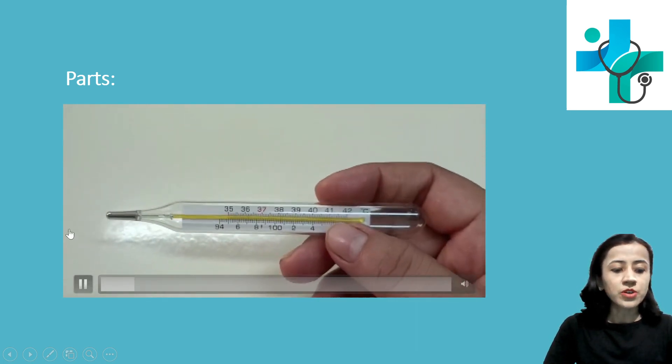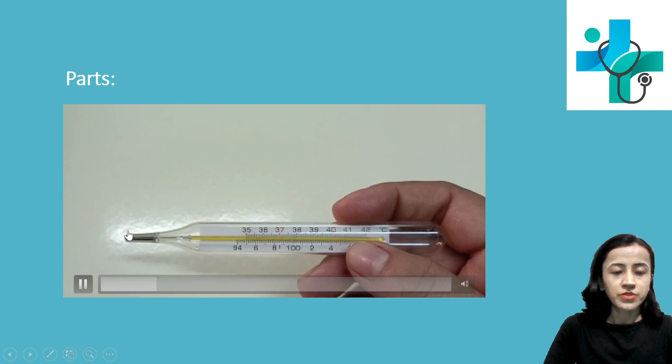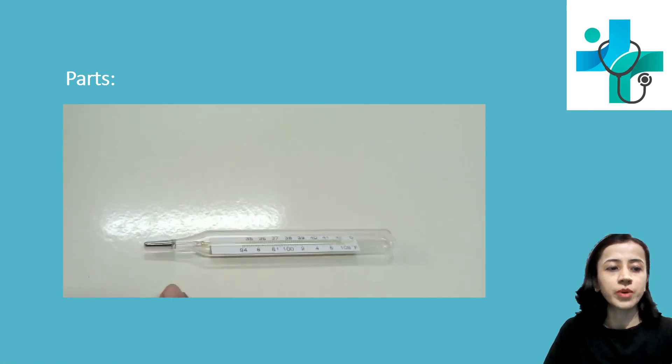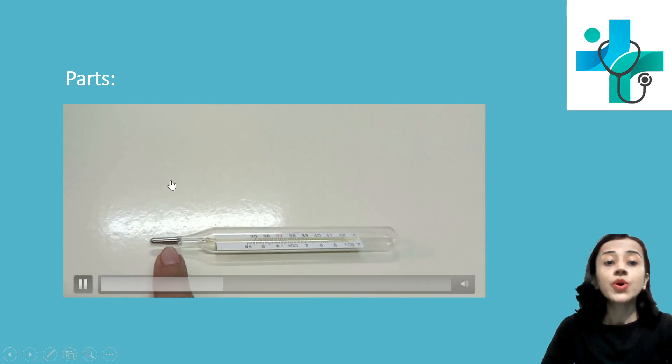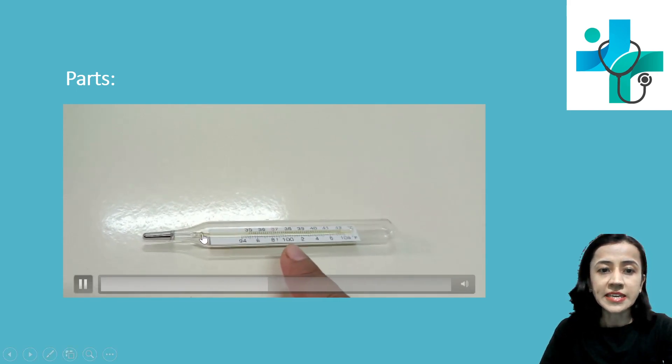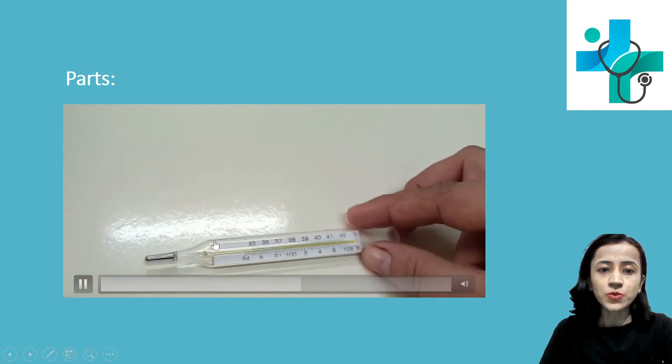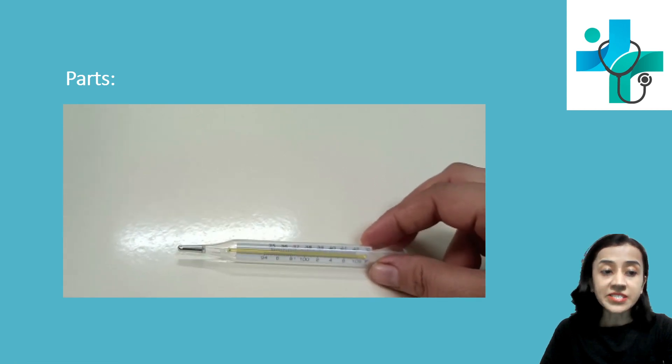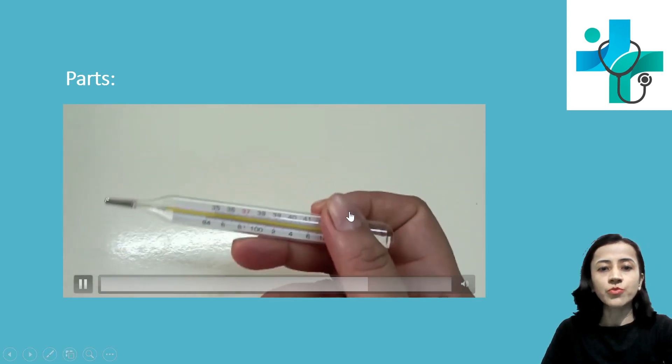Thermometer has got a bulb here, which is also known as mercury reservoir. It is a reservoir of mercury and it also has a narrow tube with a kinking here. This narrow tube is known as capillary that looks like a thread and it extends to the other end of the thermometer.